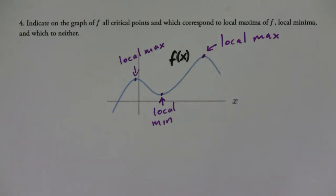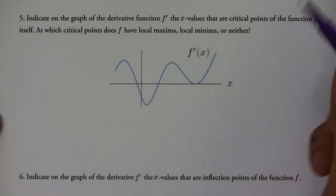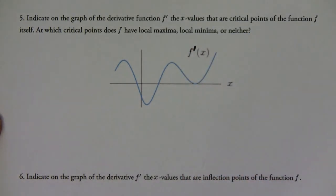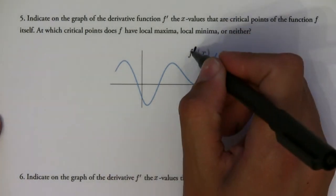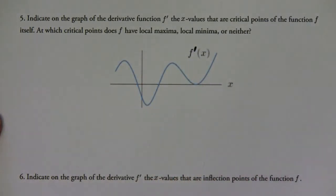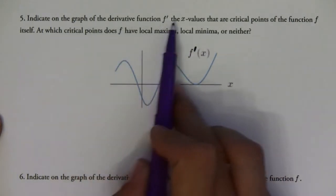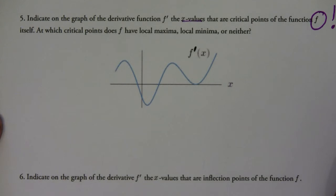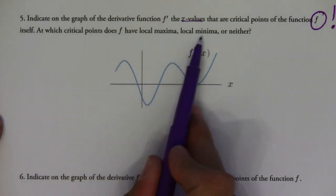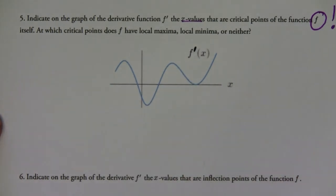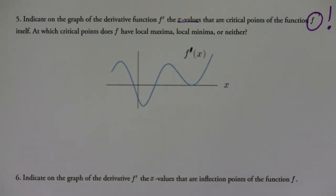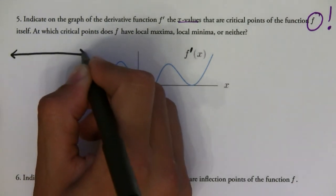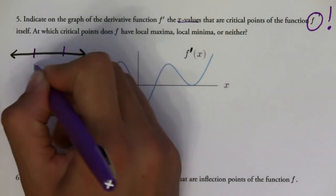Now what about this one? This one is different because this is the first derivative of a graph — not necessarily the one we just did, but this is a graph of the first derivative. The question is: indicate the x values that are critical points of the original function. You have to be a little careful, and then determine which ones are local maximums, local minimums, or neither. To answer this, we need to remember the first derivative test.